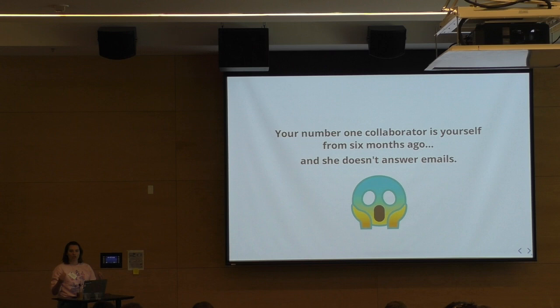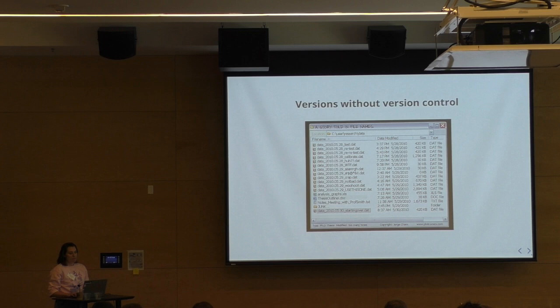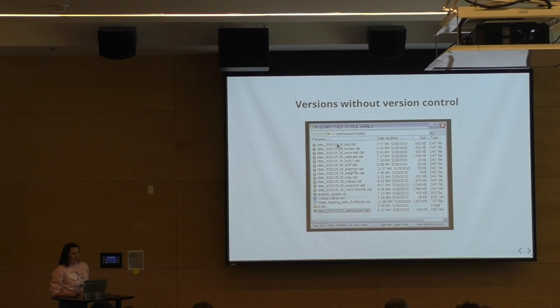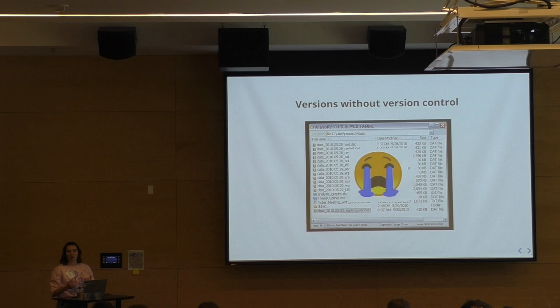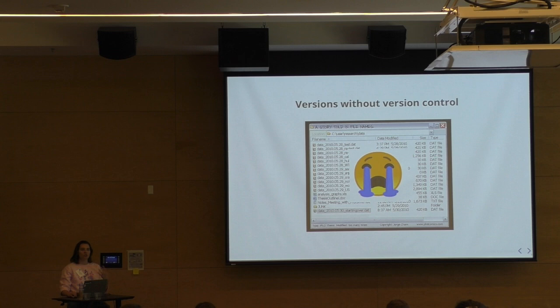Here's another PhD comic — people have had this problem for a long time. Without version control, you end up with files named data, date, test, retest, re-retest, calibrate. Which version of the data do you want to use? How do you know what to do when you come back six months or a year later? With version control, you can make sure everything's synced — you know what data went into what analysis and what the code looked like on a certain date.